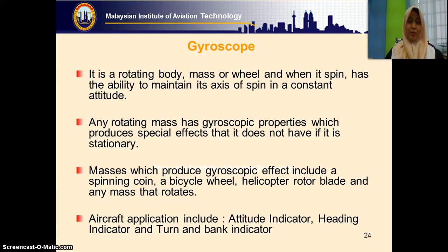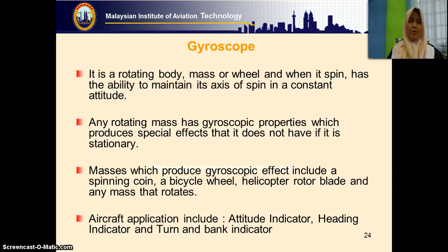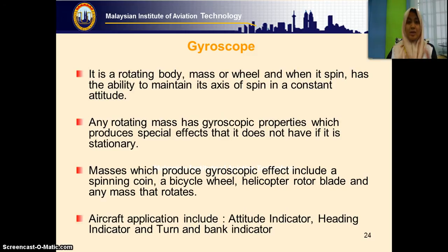Do you know what is a gyroscope? A gyroscope is a rotating body, mass or wheel. When it spins, it has the ability to maintain its position in a constant attitude. The easiest way to see the application of the gyroscope is a bicycle, or you can see the Earth rotates, so it can be considered as a gyro.